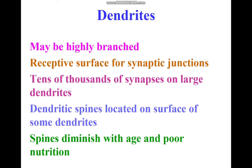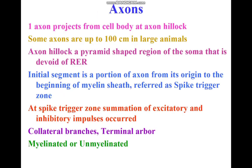Dendrites are highly branched, just like the branches of a tree. They form the receptive surface for synaptic junctions — there can be tens of thousands of synapses on large dendrites. Dendritic spines are located on the surface of some dendrites, and these spines diminish with age and poor nutrition.